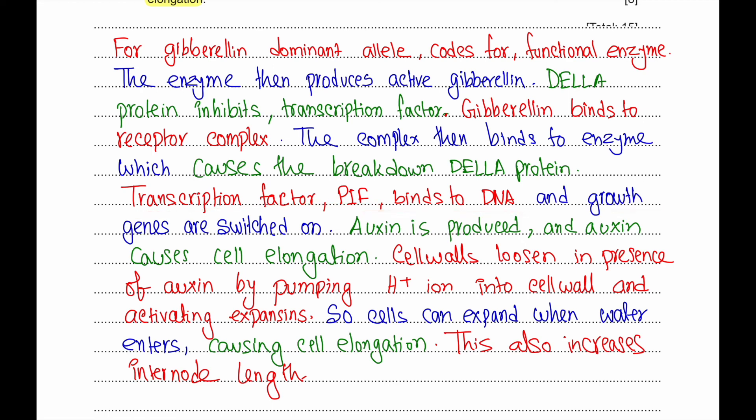This makes the transcription factor free and they can bind with DNA, and growth genes are then switched on. Auxin is produced, and auxin causes cell elongation. The cell wall loosens in presence of auxin by pumping hydrogen ion into the cell wall and activating an enzyme known as expansins. Expansins cause the cell wall to loosen up, and once the cell absorbs water it can increase in size. The cell can expand when water enters, causing cell elongation. This also increases internode length in rice plants.